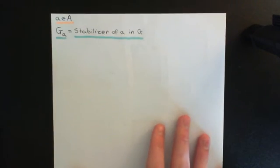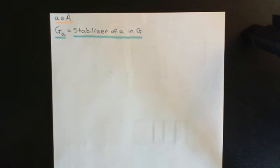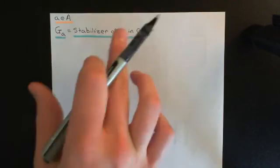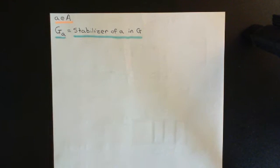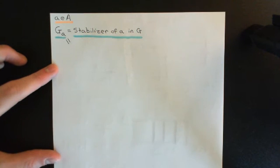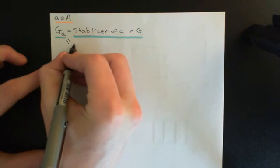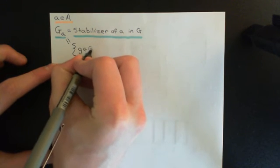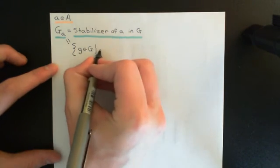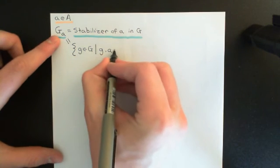What is the definition of the stabilizer of a in G? I should stress that this notation we're using for orbits and stabilizers is pretty common, but there are other notations — some people use 'orb' for orbit and 'stab' for stabilizer. The stabilizer of a in G is going to be a subset of elements of the group capital G — specifically all little g from capital G such that when little g acts on the element little a, it sends it to little a.